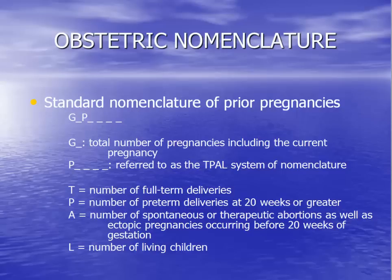After she delivers her baby, she will be a G1P1. During her second pregnancy, she will be a G2P1. Note that parity is sometimes described with four numbers. These numbers represent, in order: term deliveries, preterm deliveries, pregnancy losses before 20 weeks, and total number of living children. A woman pregnant with her second child, whose first child was delivered at term and is alive, would be a G2P1001.